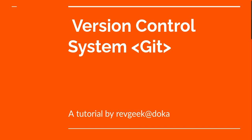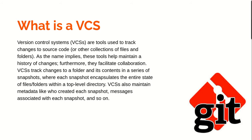Let's get to know what a version control system is — in this case, Git. Version control systems are tools used to track changes to source code or other collections of files and folders. As the name implies, these tools help maintain a history of changes. Furthermore, they facilitate collaboration in terms of software development or whichever sort of collaboration people intend.